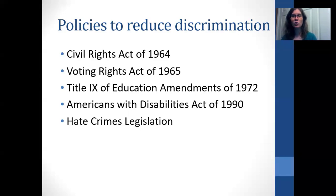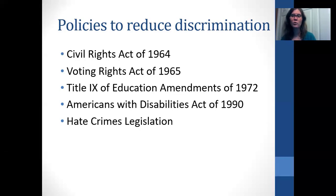If someone is undocumented, they can be denied a job, housing, and access to college. For example, Georgia has a law where you cannot attend a public university if you are not documented — you must provide a Social Security number or other proof of legal status in order to enroll. So we still have a long way to go to eliminate discrimination.